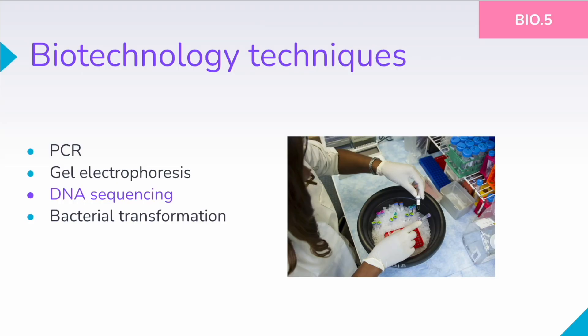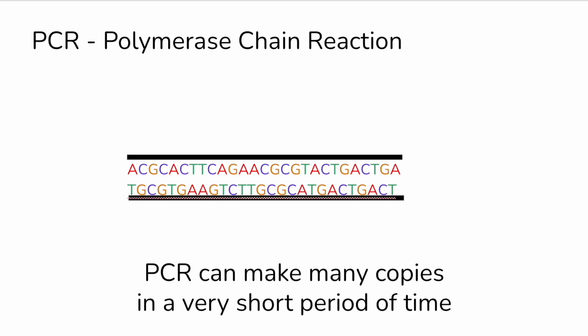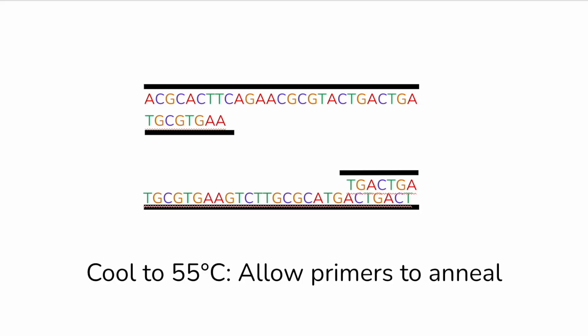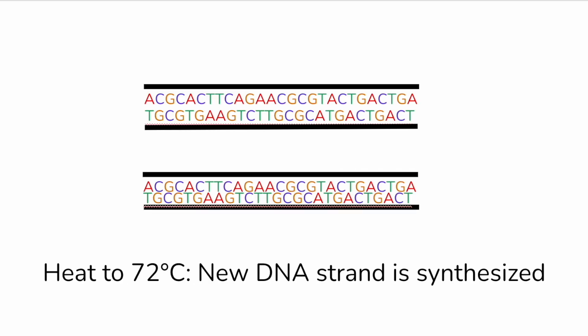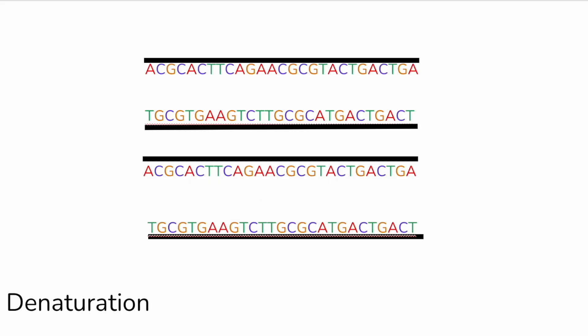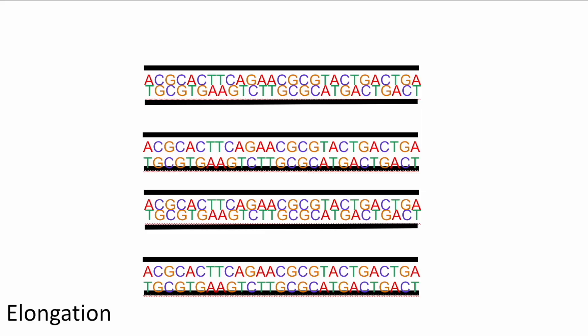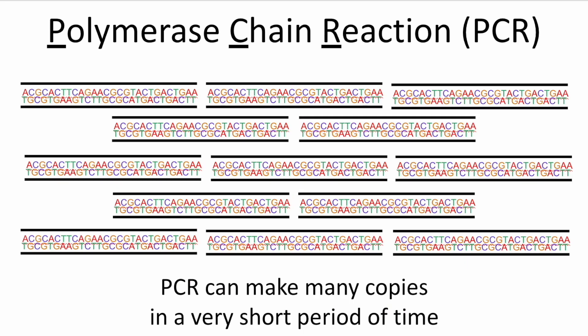Many of these things are possible through biotechnology techniques. PCR — polymerase chain reaction — is one of those. It's a way to make many copies of DNA in a very short period of time. DNA is denatured or separated by heating it up, then when cooled a little bit, special small segments called primers anneal or attach to the DNA. New nucleotides are added to make new strands based on that template, and then we do it again. This is all done within a machine over and over again until we get many copies in a short period of time, which allows us to do all kinds of experiments with DNA.